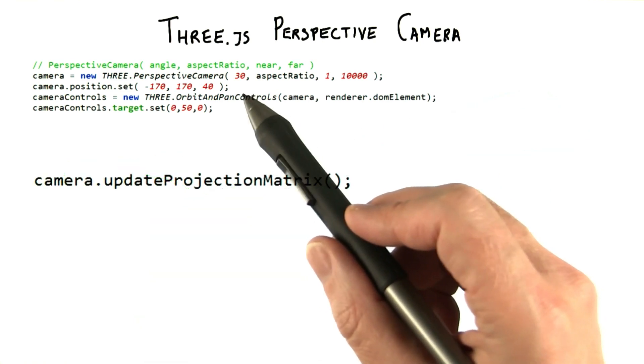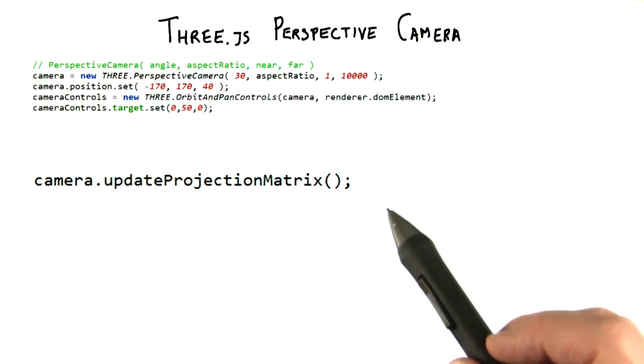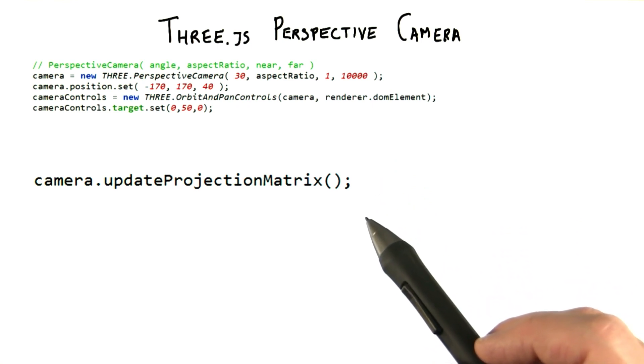If you later change values on the camera itself, such as the field of view, near or far planes, in Three.js, you need to call camera.updateProjectionMatrix in order to have these changes take effect.